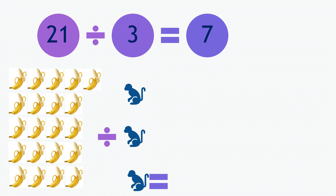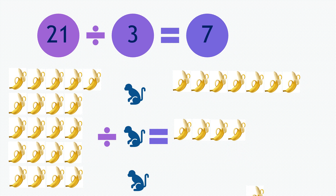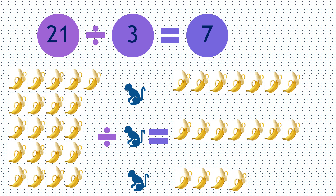Each monkey will receive 7 bananas: 1, 2, 3, 4, 5, 6, 7 — 1, 2, 3, 4, 5, 6, 7 — 1, 2, 3, 4, 5, 6, 7.